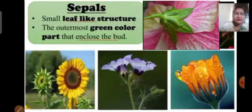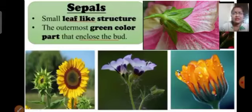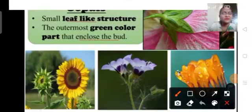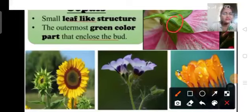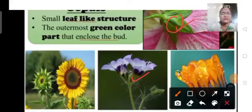Next we will see about sepals. Sepals are small leaf-like structures just below the petals. The outermost green colored part that encloses the bud is known as sepals. These green colored parts of the flower just below the petals are sepals. I hope you understood the difference between sepals and petals.